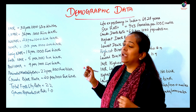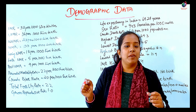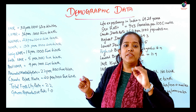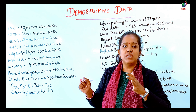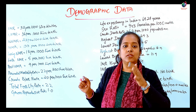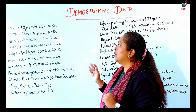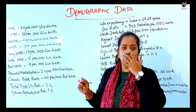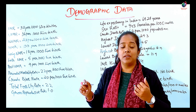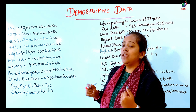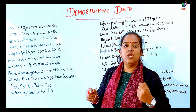Second is U5MR, that is Under-5 Mortality Rate. If we look at the rates up to 5 years, that is 36 per 1,000 live births.